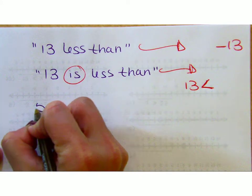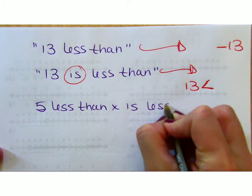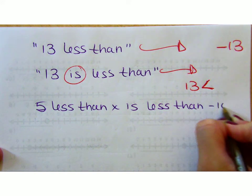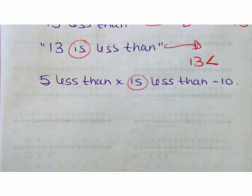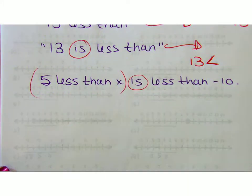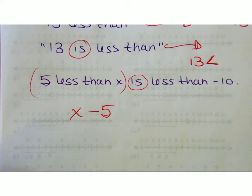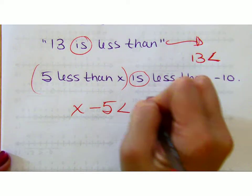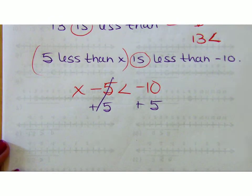If I were to give you this statement, could you write it? 5 less than x is less than negative 10. So you see two less thans. How would I write 5 less than x is less than negative 10? I see the is. So take it one step at a time. How would I write 5 less than x? x minus 5 is less than negative 10. I really just wanted you to kind of be aware of that because that does happen and it does get a little confusing.